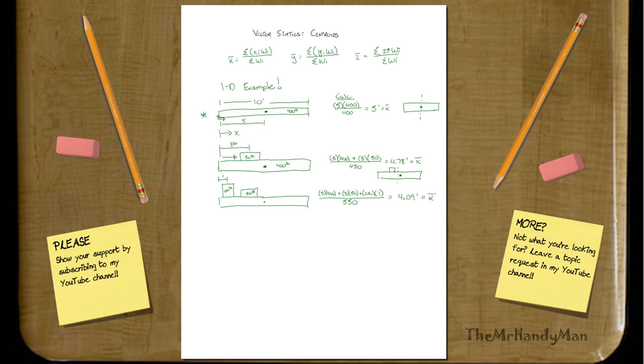Our x-bar is going to be now 4.09 feet. So you can see how, as we add weight more and more on the left-hand side, this centroid is being moved further and further left. It's just because it's basically a weighted average. That's how you have to look at it. So let's see if we can counteract that.